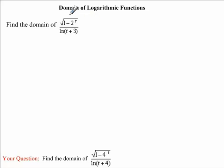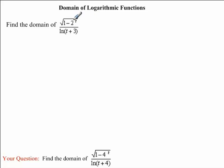We are asked to find the domain of this expression. To begin, we're going to look at the numerator. Because we have a square root in our numerator, we need to ensure that the number underneath the square root is positive. In other words, we want 1 minus 2 to the exponent t to be greater than or equal to 0.